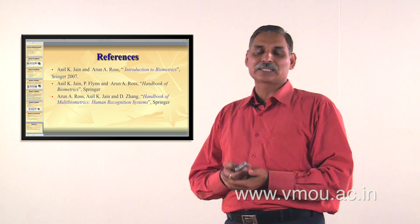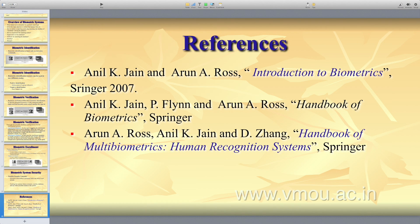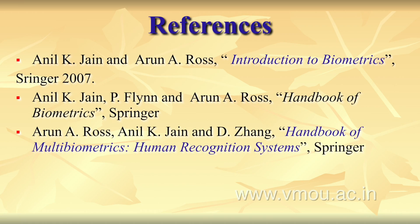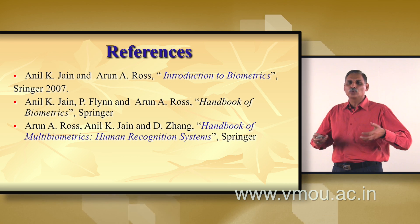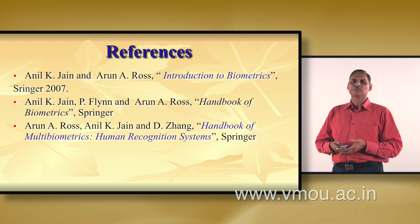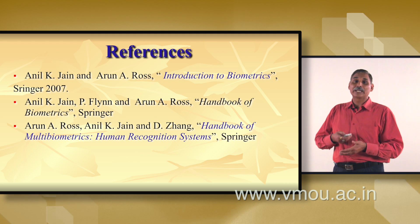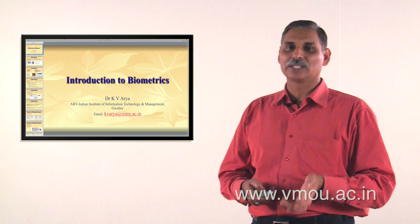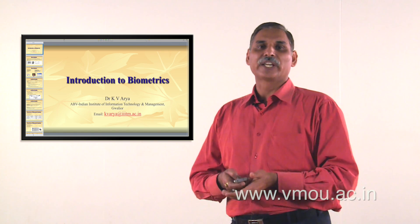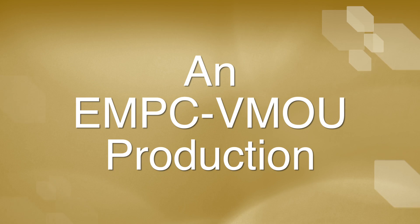For references, one can look into Anil Jain et al.'s Introduction to Biometrics — a very good book to start with — and also the Handbook of Biometrics by the same author. A third reference is the Handbook of Multimodal Biometrics, because multiple biometrics like fingerprint, face, and signature information can be fused and combined to get better security and better accuracy from the system. Thank you very much.